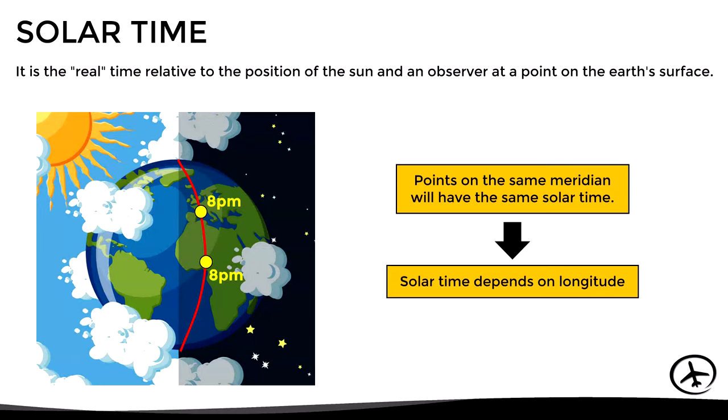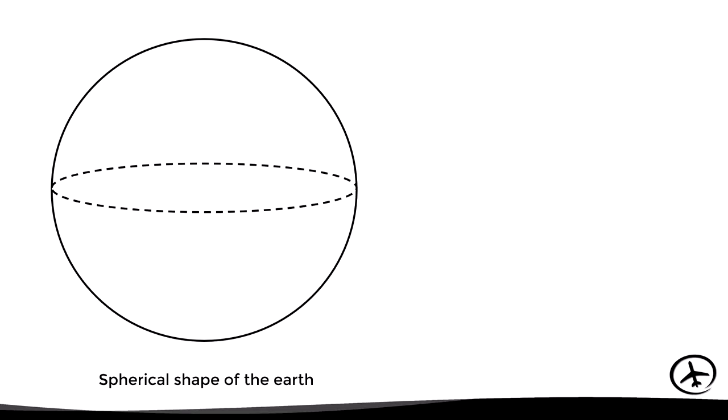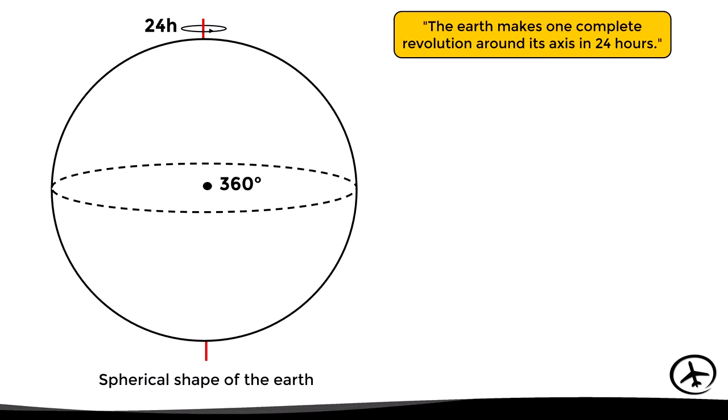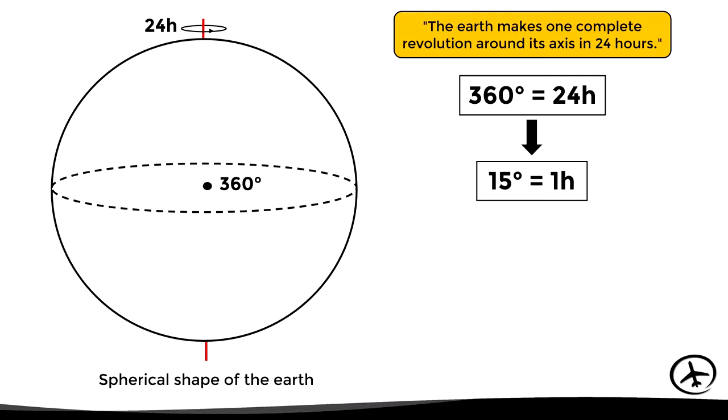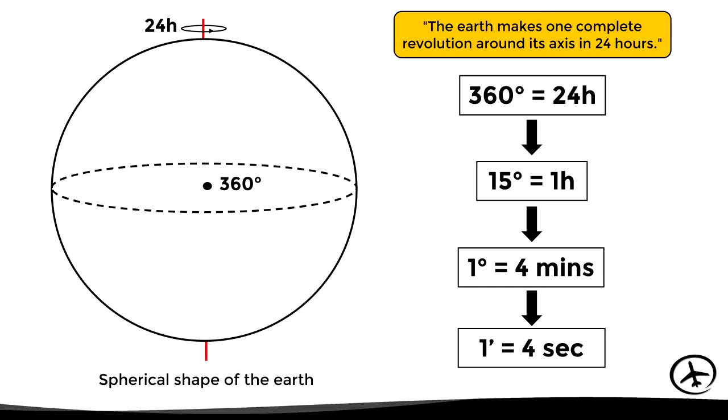Let's relate the degrees, minutes, and seconds of longitude to the passage of time in hours and minutes. The Earth makes one complete revolution of 360 degrees in 24 hours, which means it takes one hour for the Earth to rotate 15 degrees. Therefore, it takes four minutes for the Earth to rotate one degree, and four seconds to rotate one minute of longitude.